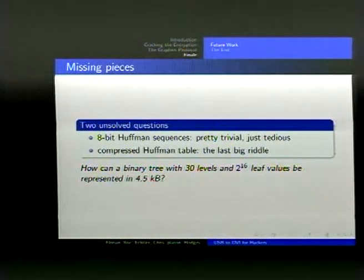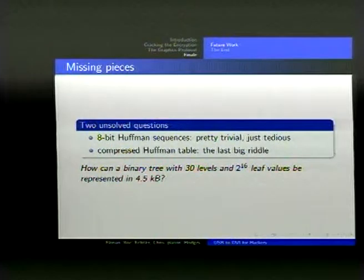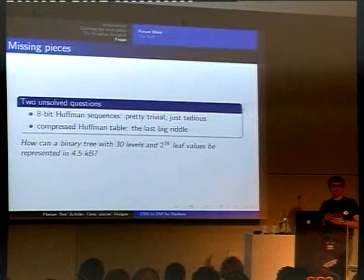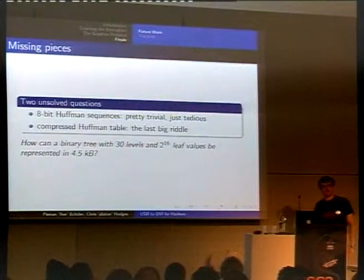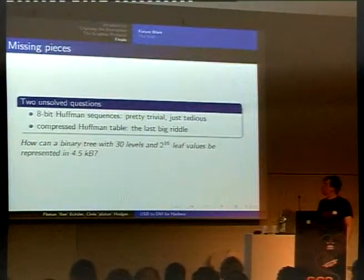So the first one is pretty trivial. This is that we don't have the Huffman sequences for the 8-bit mode yet. So this should be rather trivial, because you just have to repeat the process with colors which differ in the last 8 bits.